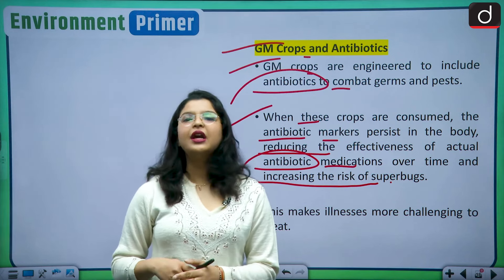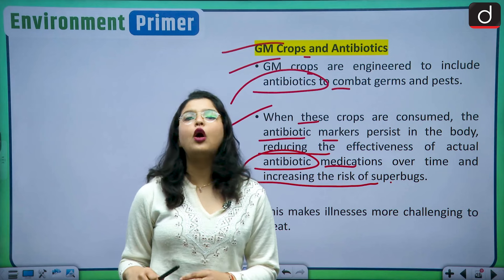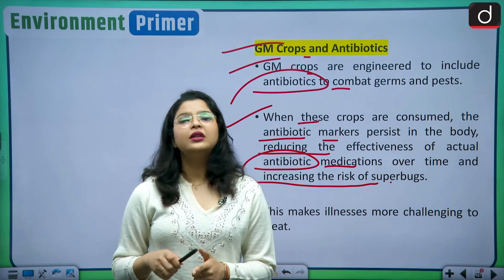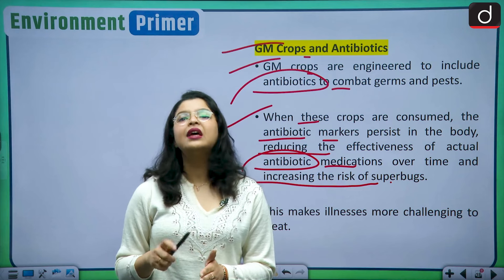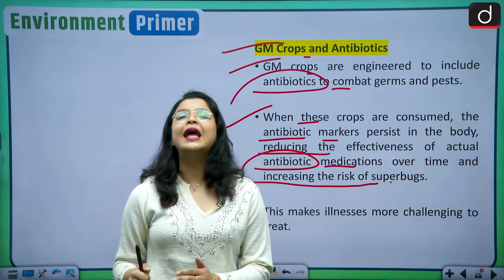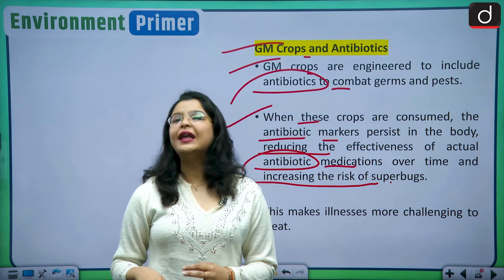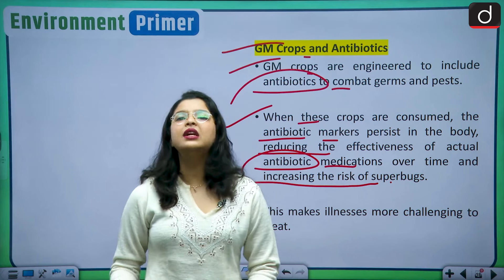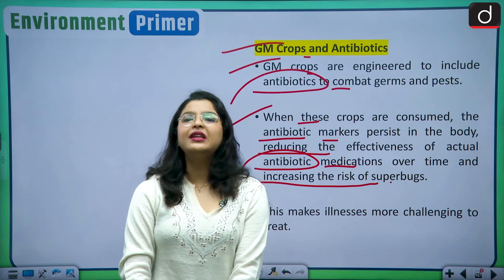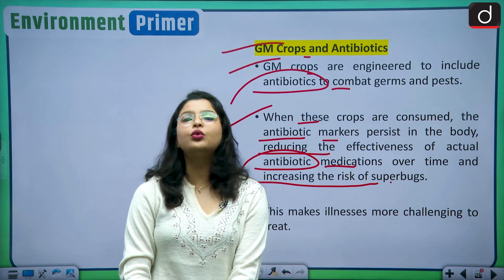With this, we come to the conclusion of today's discussion. We have seen what GM crops are, analyzed the situation in India, the legal framework, and found out the challenges, issues and concerns related to GM crops. These can be summarized as: impact on natural flora and fauna, impact on biodiversity, impact on human health through antibiotic resistance, corporate monopoly in cultivation, and their unnatural nature.